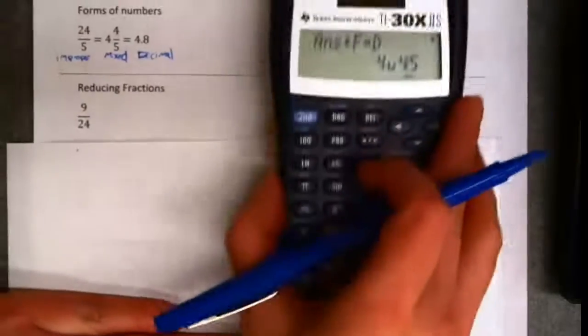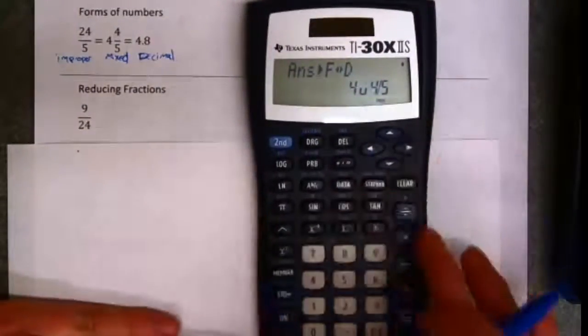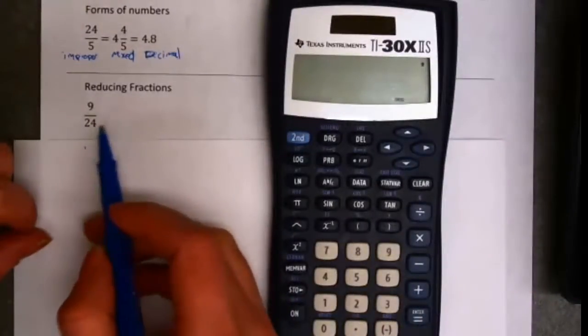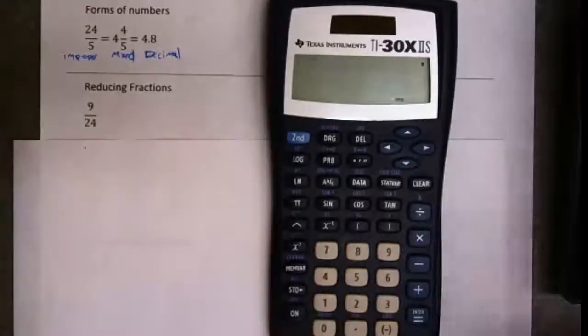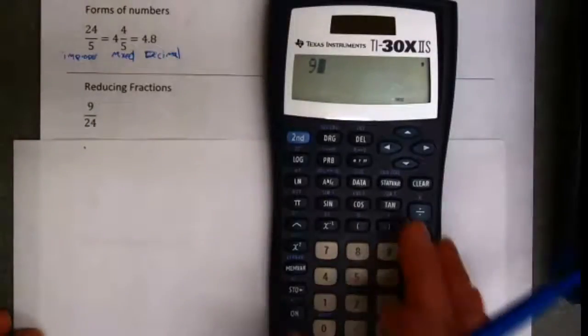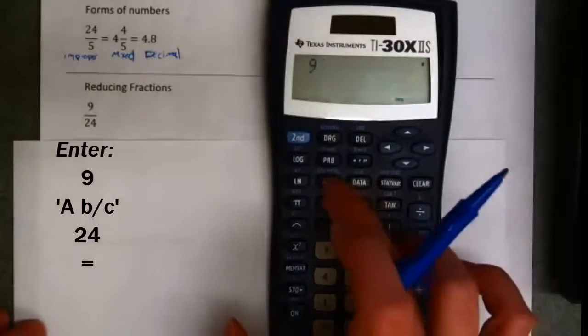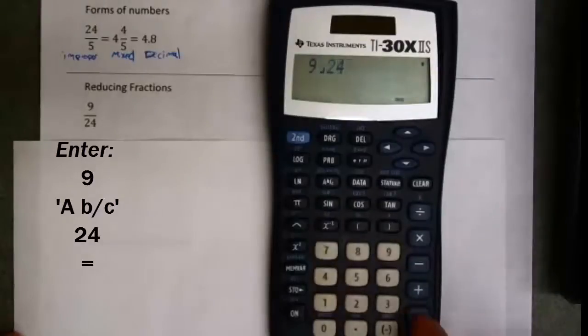Now here's where the calculator really starts to come in handy. Now I would hope that my students could reduce 9 24ths using simple arithmetic. Okay, but I can type 9 24ths in as a fraction by taking 9, hitting my fraction key, and entering 24.